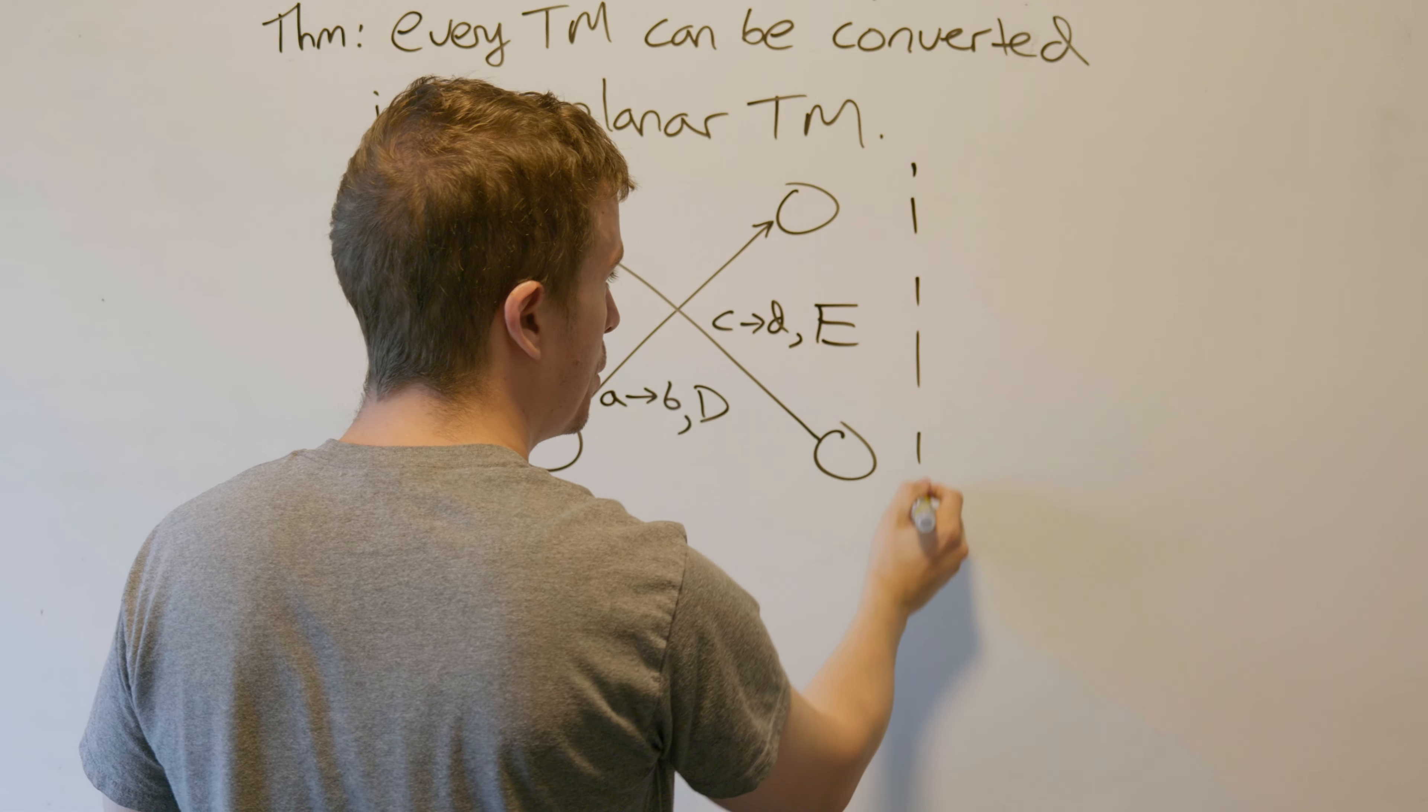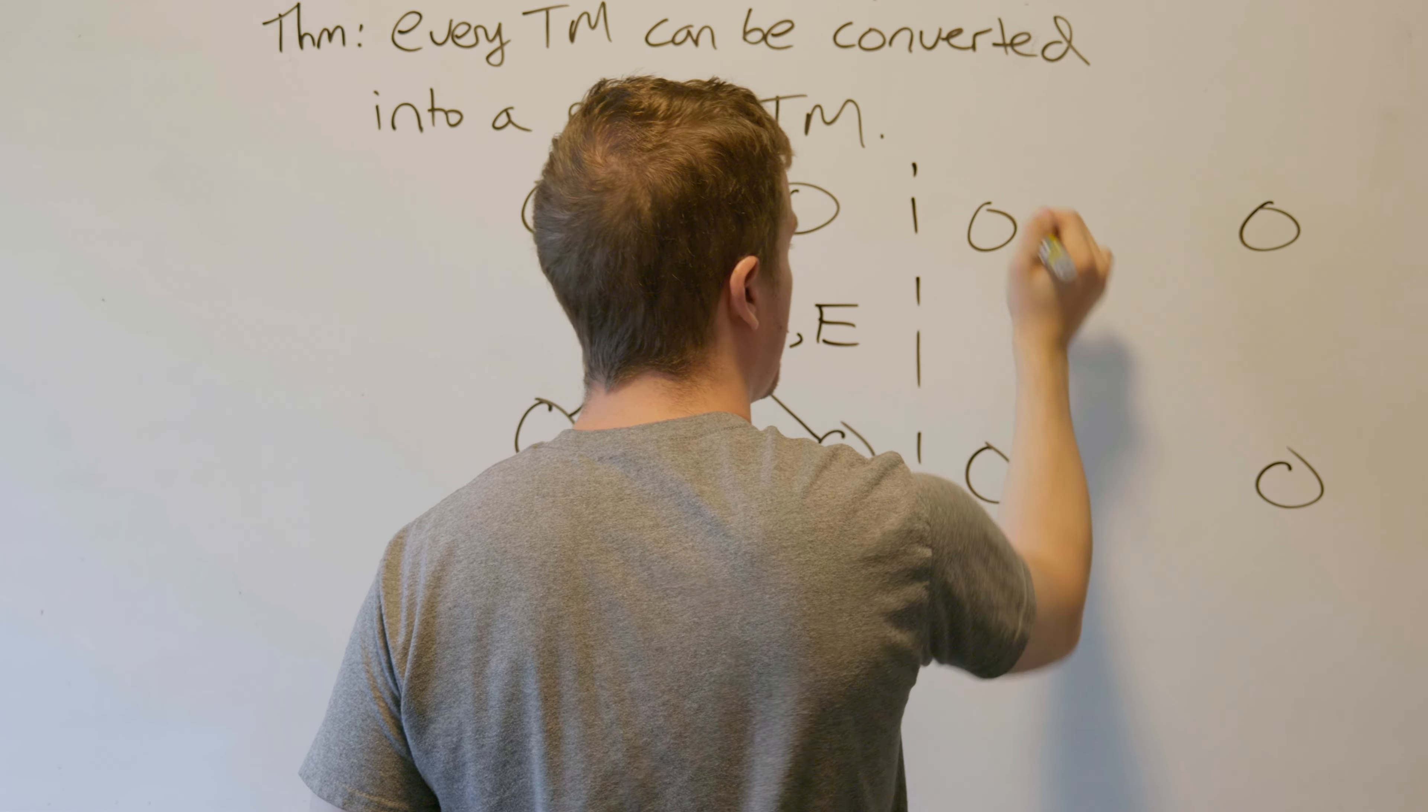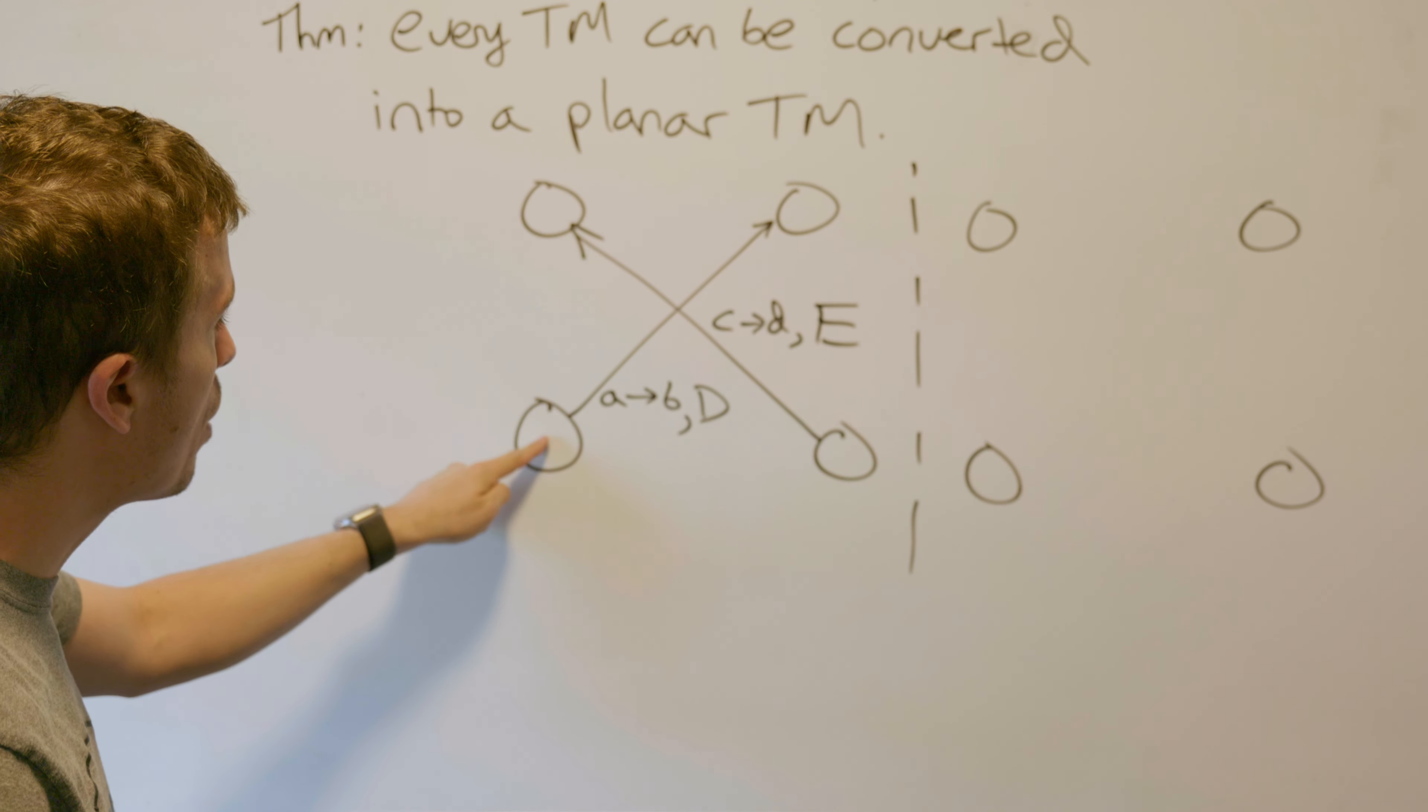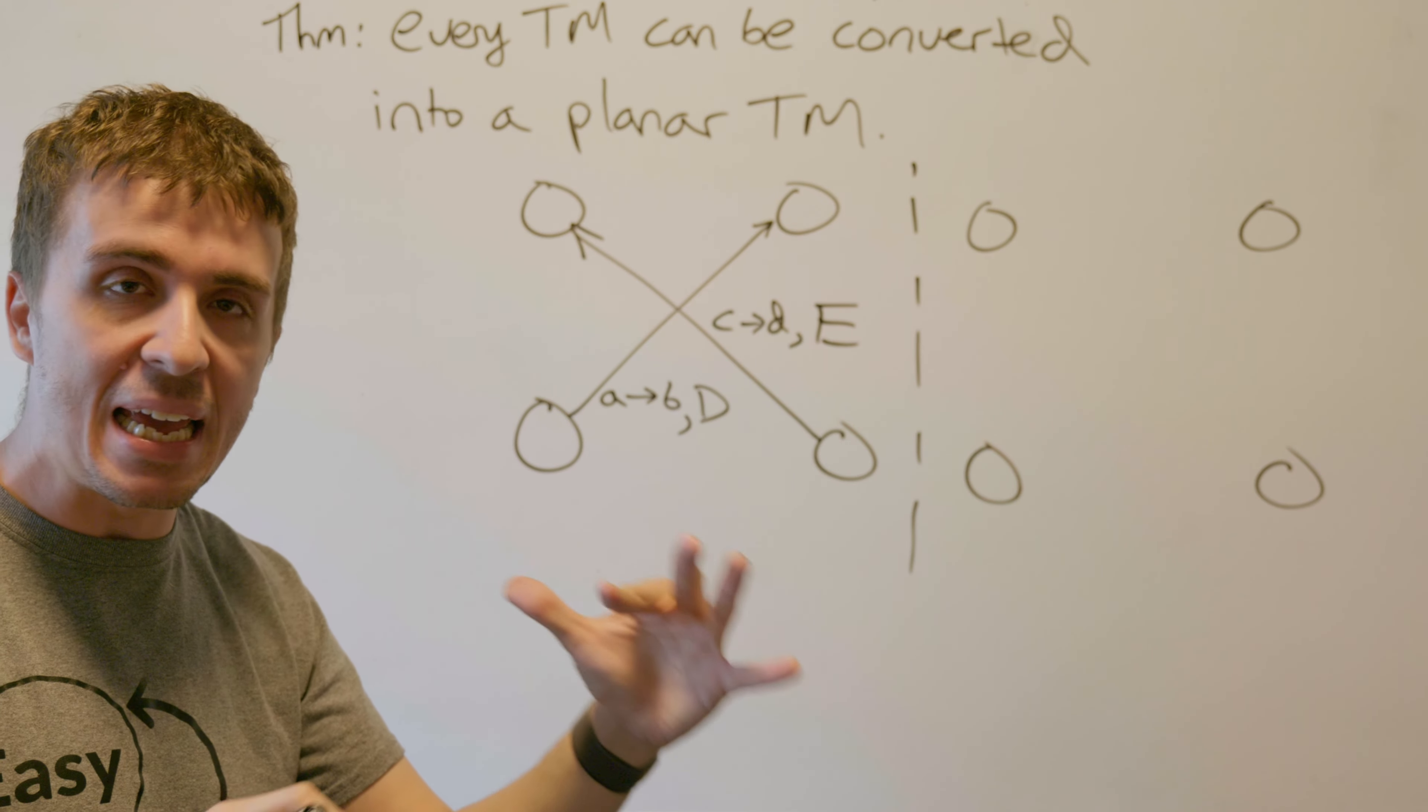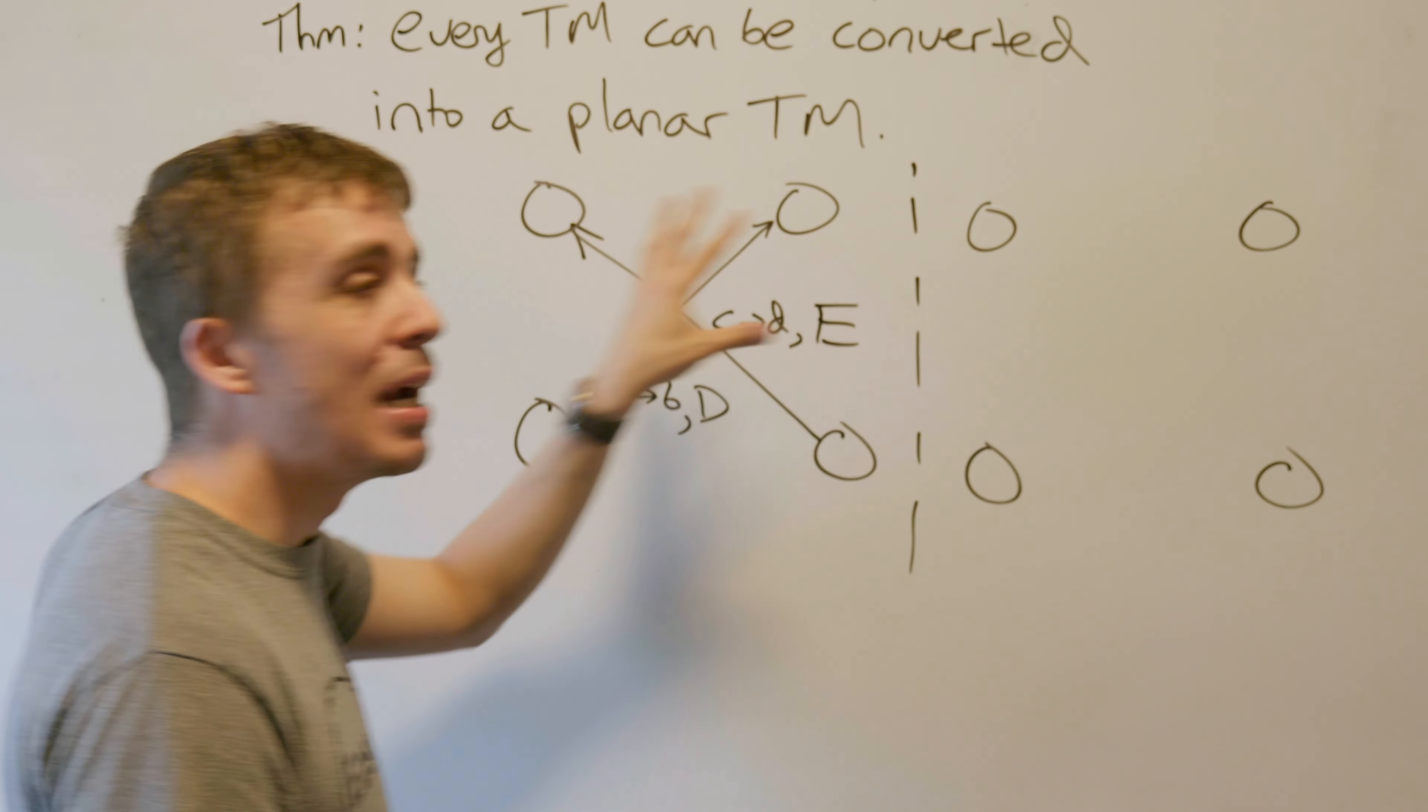I'm going to redraw this picture over here. Here are four states. What we want to do is if we're in this state taking this transition, we want to end up here, such that the state of the entire tape and everything is exactly the same over here as it is here.